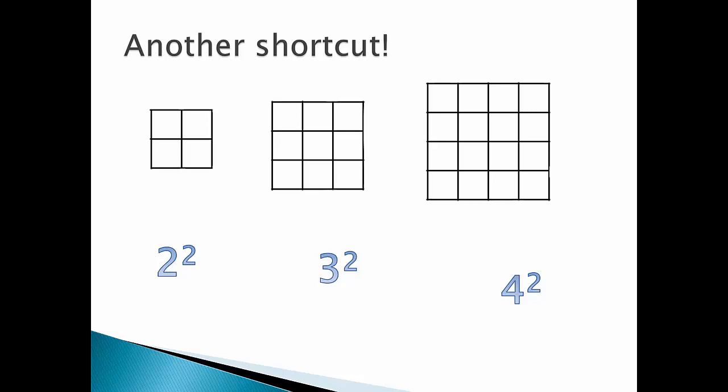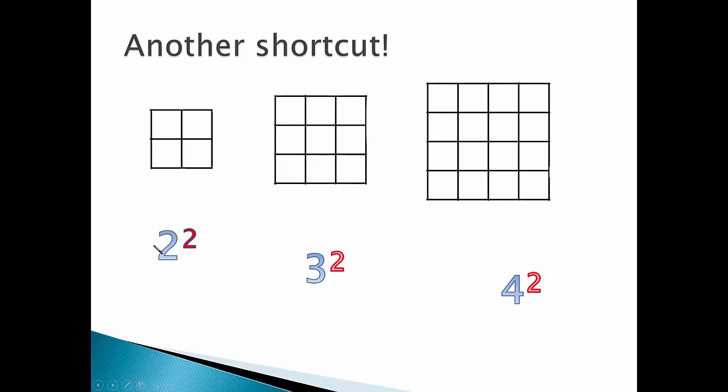For this special operation, when we multiply something by exactly the same number by itself, we have an even shorter shortcut. What do you notice is the same about these expressions? This little raised number, it's called a superscript. It's a 2 in all of them.